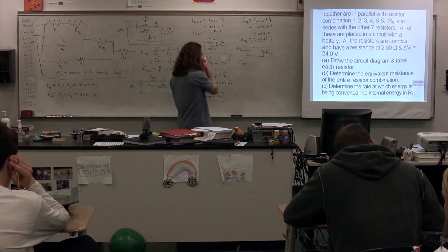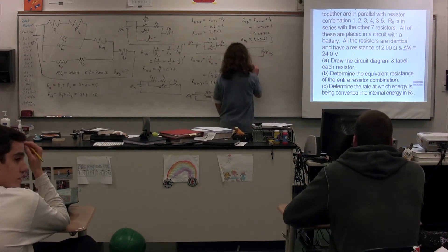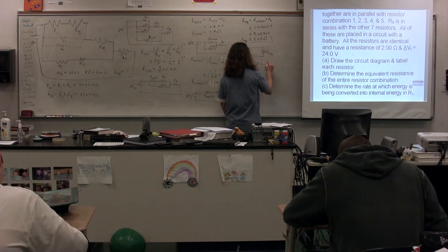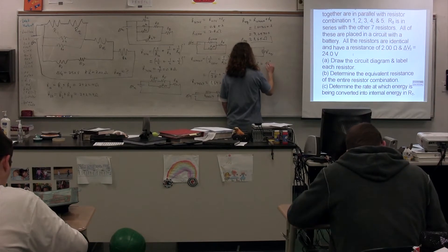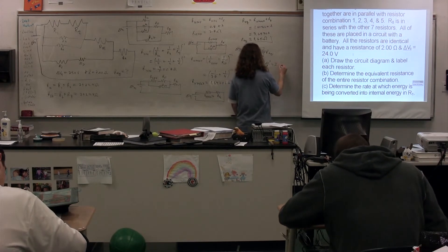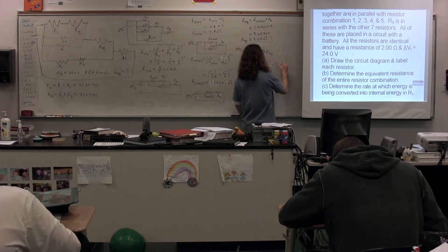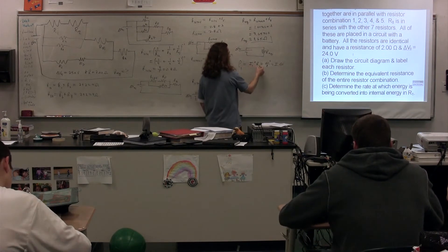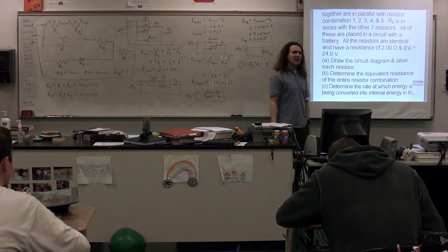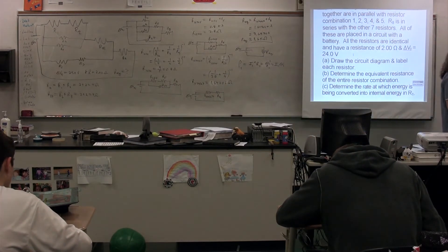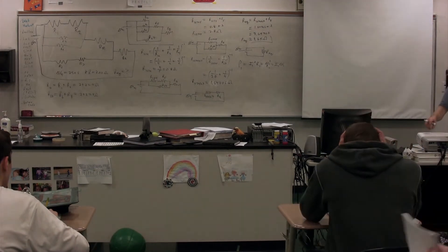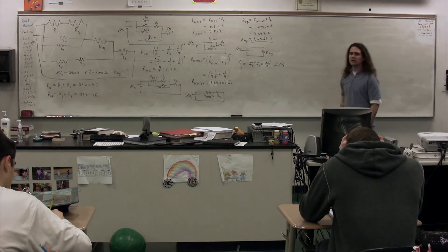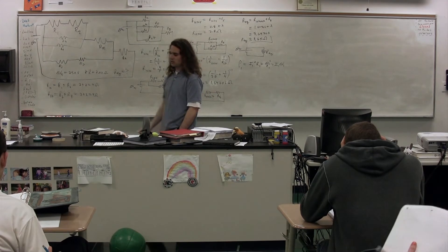Clay, can you give me all three equations for electric power? Power equals current squared times resistance. And power equals electric potential difference squared divided by resistance. And power equals current times electric potential difference. We're talking about resistor one, so I'm going to put subscripts of ones on everything. We have the resistance of resistor one, so we need either the current through resistor one or the electric potential difference across resistor one.